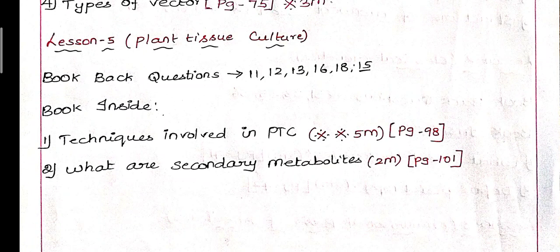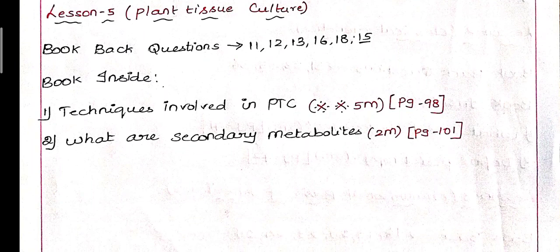Next, lesson 5: Plant tissue culture. Book back: 11, 12, 13, 16, 18, 15. Book inside: Techniques involved in PTC, that is plant tissue culture, very very important 5 mark of the chapter, page number 98. Next, what are secondary metabolites, page number 101. Next five lessons next video. Like, share, comment, subscribe to our channel. Thanks for watching, next video!